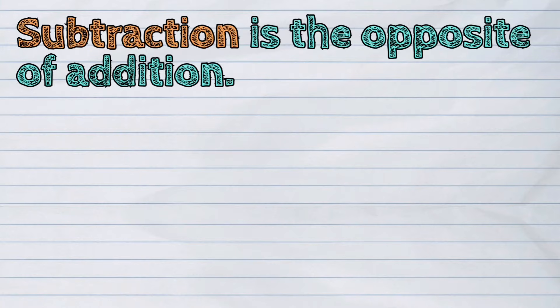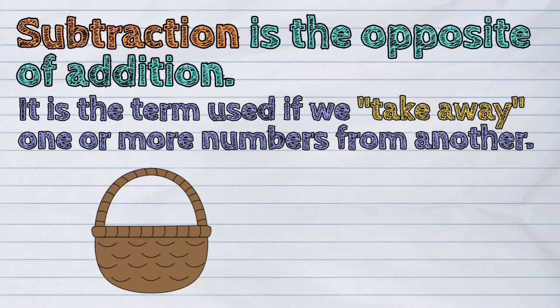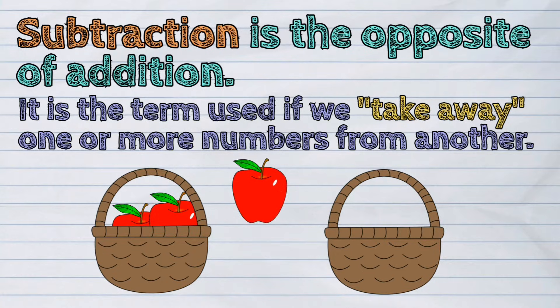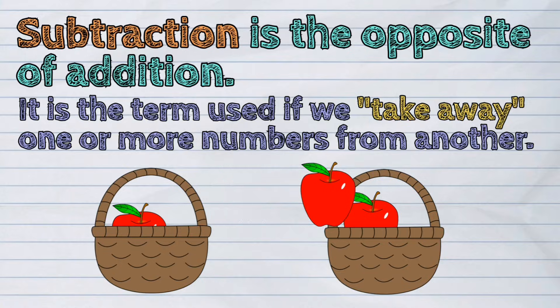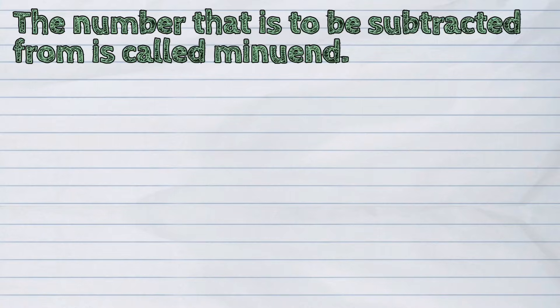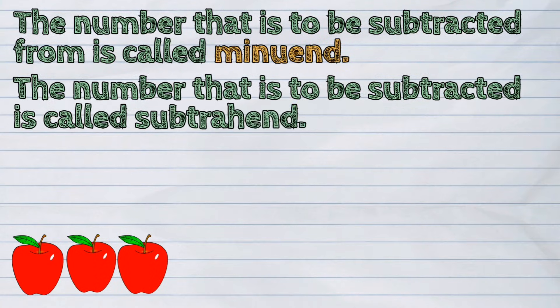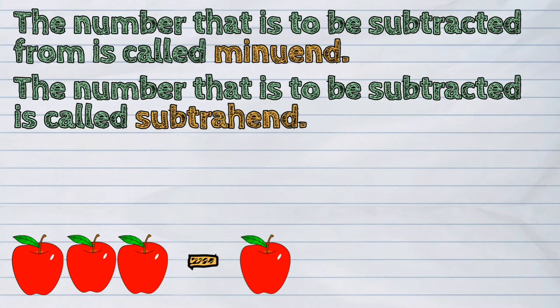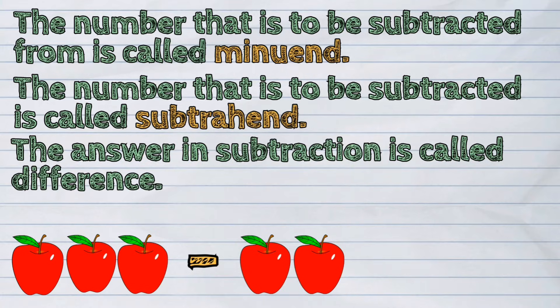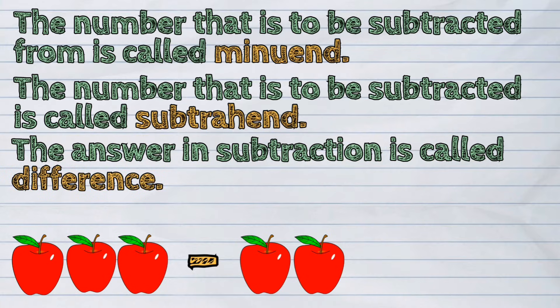Subtraction is the opposite of addition. It is the term used if we take away one or more numbers from another. The number that is to be subtracted from is called minuend. The number that is to be subtracted is called subtrahend. The answer in subtraction is called difference.